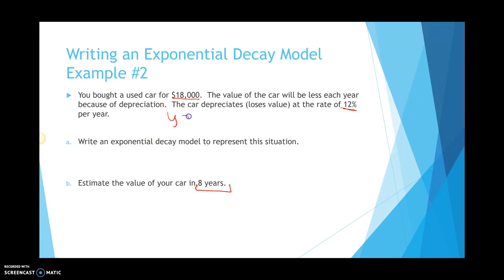So, here we have to think of y equals c, our starting cost, 1 minus r, our rate, raised to the t power. So, how would I take what's given to me and write it in the exponential decay model? Well, my $18,000 is my c, my 12% is my rate. So, I write this as y equals $18,000 parenthesis 1 minus 0.12 because we changed that rate to a decimal, raised to the t power.